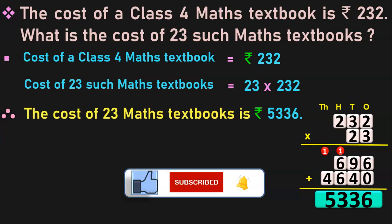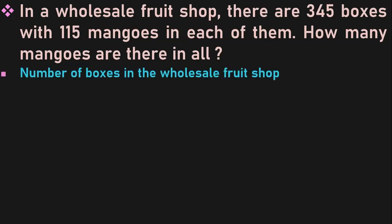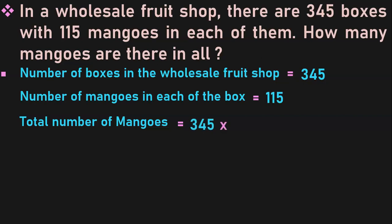Do you find them interesting? Stay with me till the end of this video because we are going to cover many more concepts in class 4 word problems multiplication. In a wholesale fruit shop, there are 345 boxes with 115 mangoes in each of them. How many mangoes are there in all? Number of boxes in the wholesale fruit shop is equal to 345. Number of mangoes in each box is equal to 115. Total number of mangoes in all — we have to multiply 345 by 115.